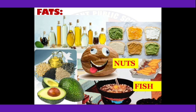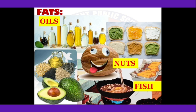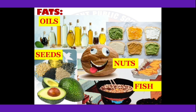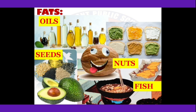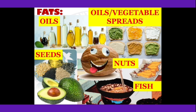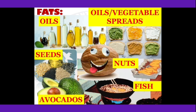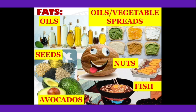Fats are available in various oily substances like fish, which contains animal fats, then nuts, oils from seeds such as groundnut oil, sesame oil, and mustard oil, and some spreads made from vegetable oils like peanut butter. One very good source is avocado — not common in our regular diet but very regularly taken in Western countries because it contains a lot of good fats.